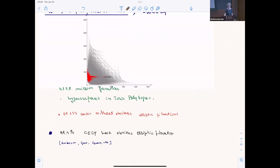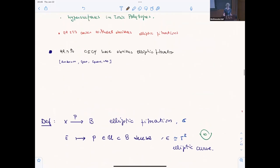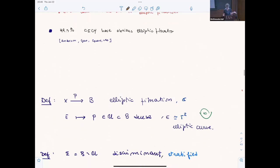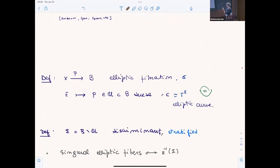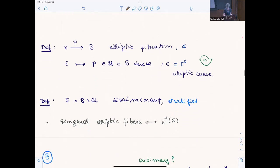What's an elliptic fibration? X is a Calabi-Yau variety, a threefold maps to a surface. On a dense open set, the inverse image is a torus, elliptic curves which may or may not be marked. The places where the fiber is not a torus, where the fiber is degenerate, is called the discriminant. It has a natural stratification structure. The singular elliptic fibers are over the inverse image of this discriminant.